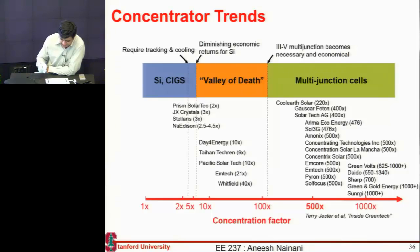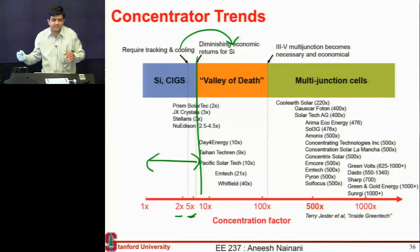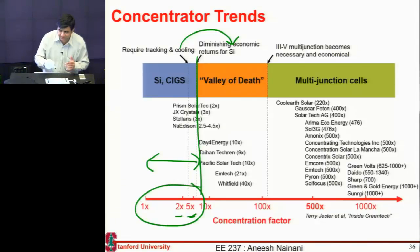This is where most people who design concentrator for silicon, they try to design it for a range of 2x, 5x kind of range. If you want to go beyond that, you need more complex optics. Or if you're using a silicon-based cell, it does not have the efficiency or the efficiency gain only makes sense if you're operating in this range. That is, if you're using concentration of 2x, 5x.